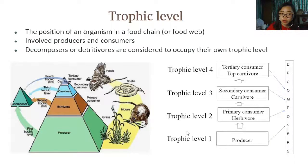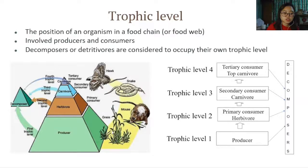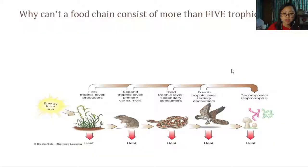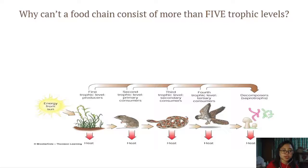Most trophic levels usually go up to trophic level 4 or a maximum of 5. Why can't a food chain consist of more than 5 trophic levels? Do pause and have a think. If you're ready, continue with the video.